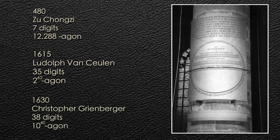He was beaten about 15 years later by Christopher Grienberger, who got out to 38 digits with a 10 to the 40-agon. I believe Grienberger might have been the last person to calculate record-breaking number of digits of pi using the polygon method because then we discovered calculus and people started coming up with all kinds of crazy ways to calculate pi.